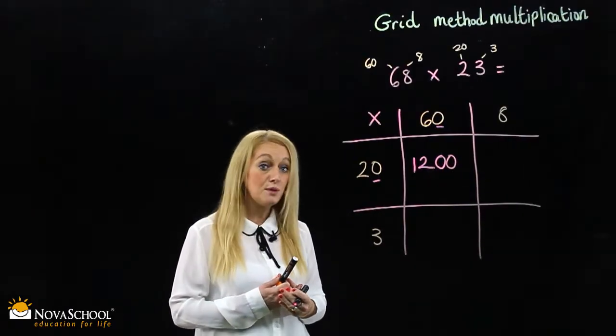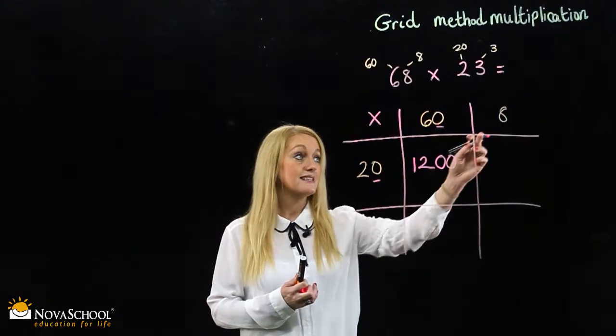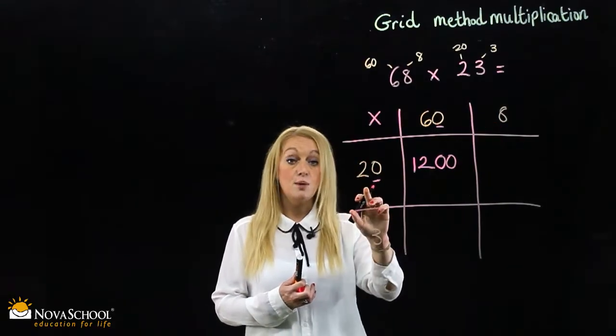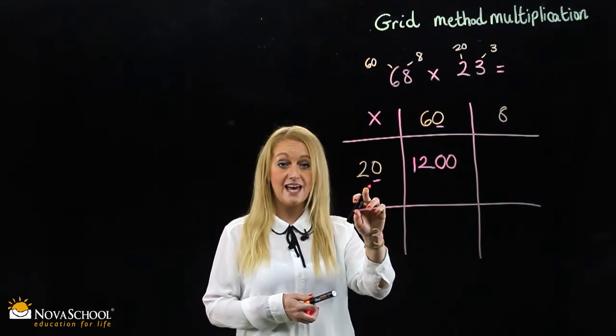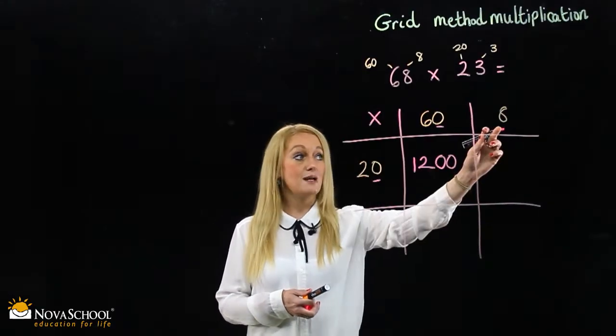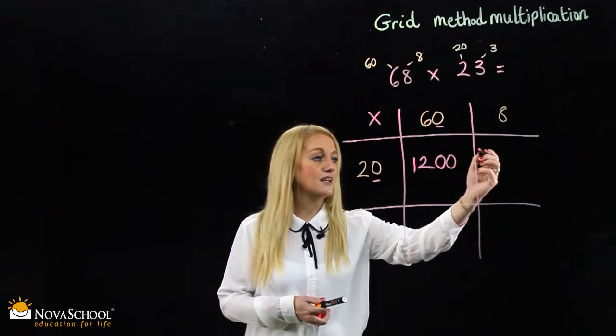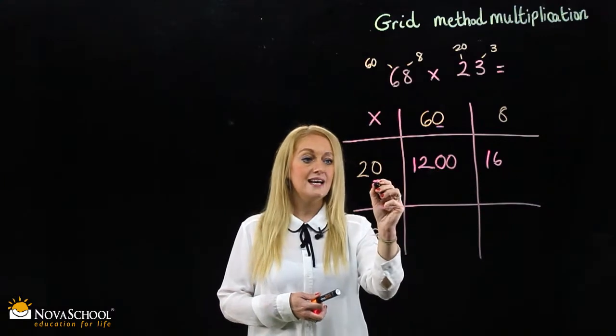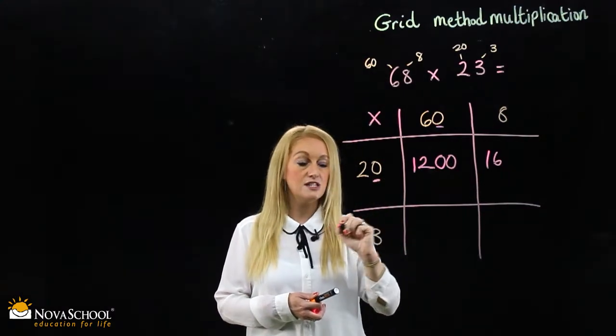Okay, let's move on. Now we do 20 times 8. So let's make it easier for ourselves again. 2 times 8. 16, correct. And we add this zero back into our answer.